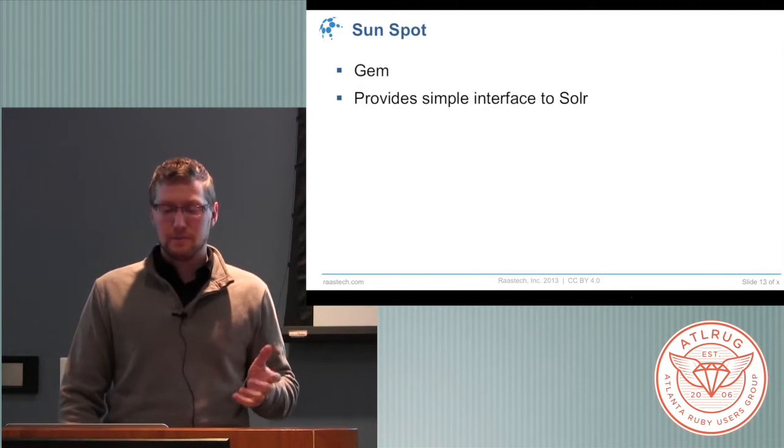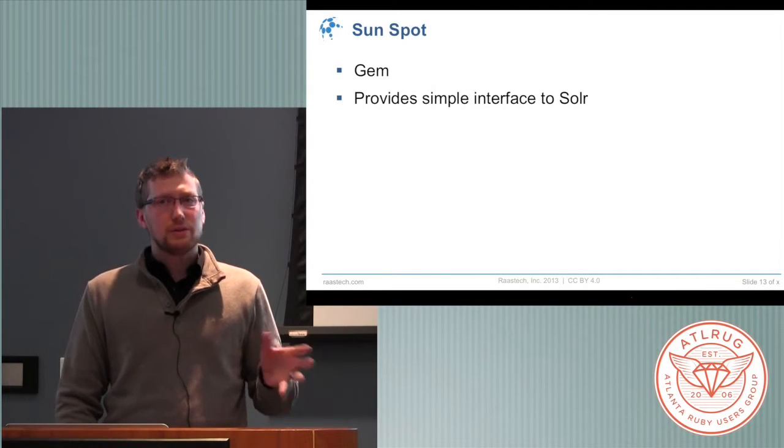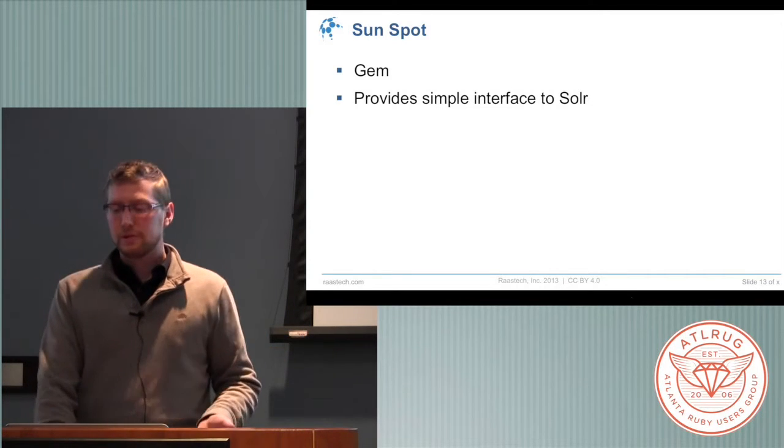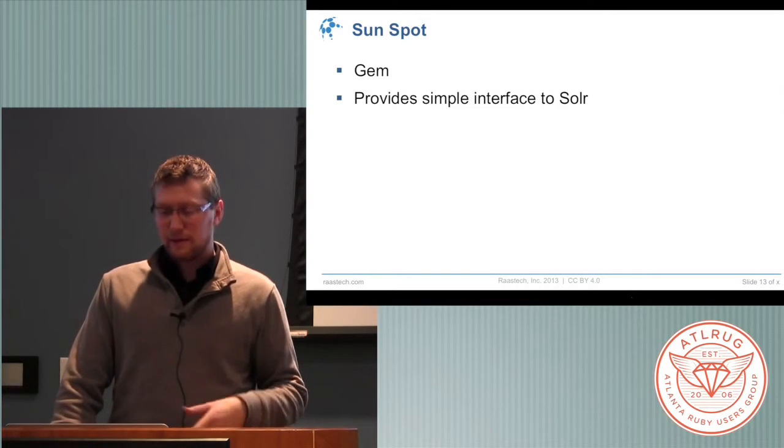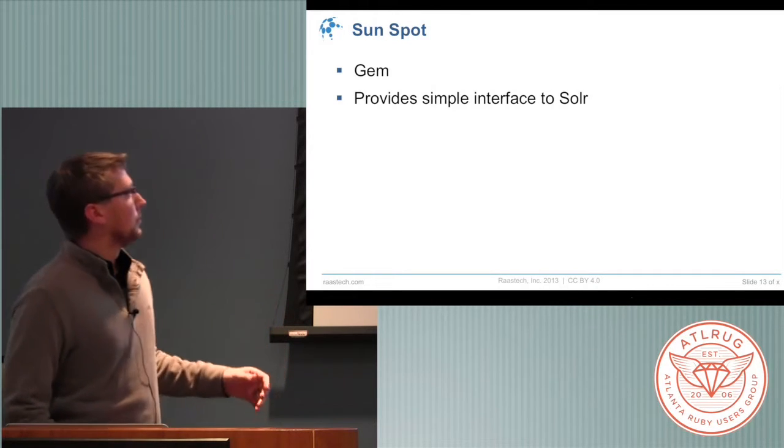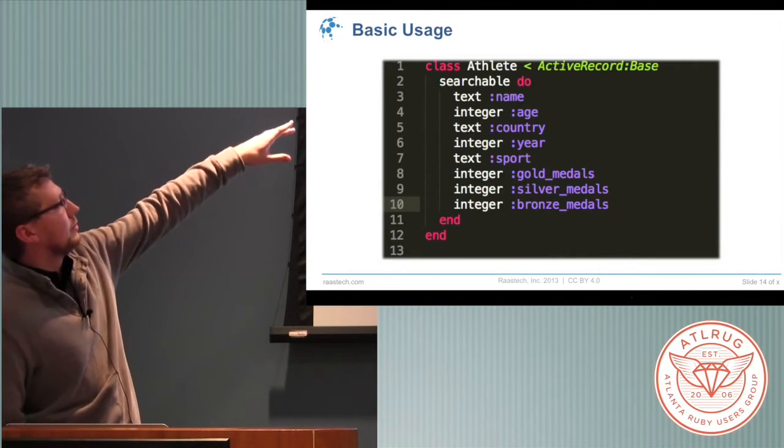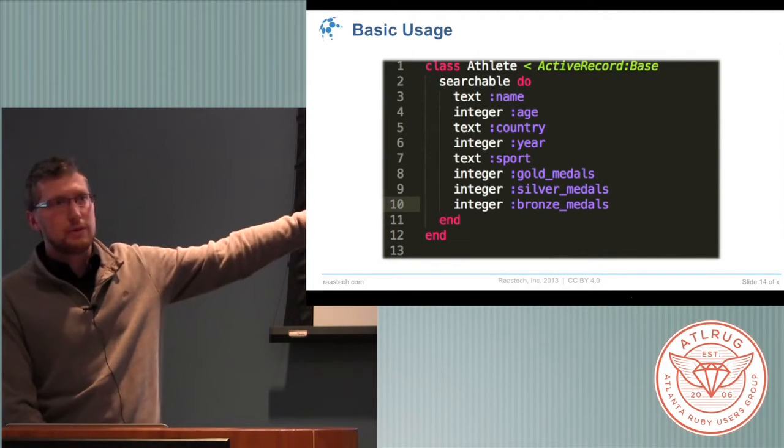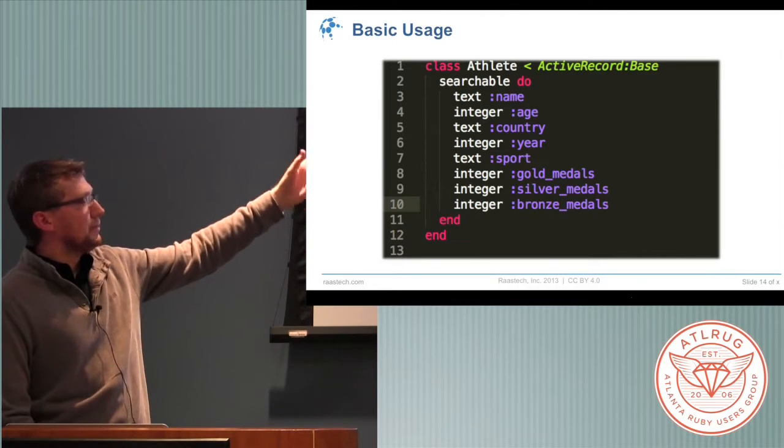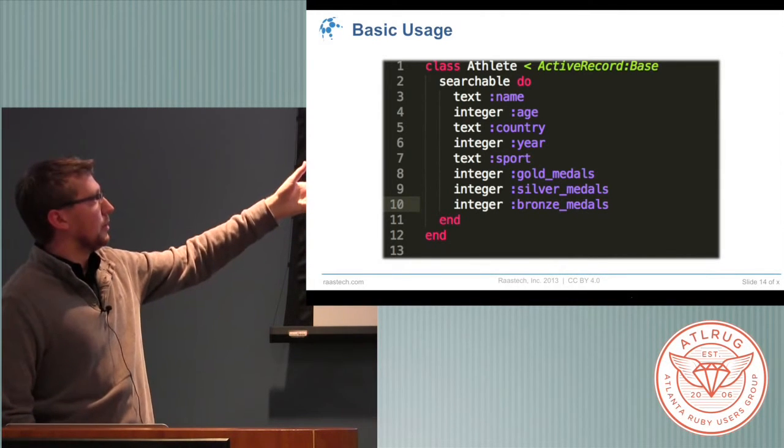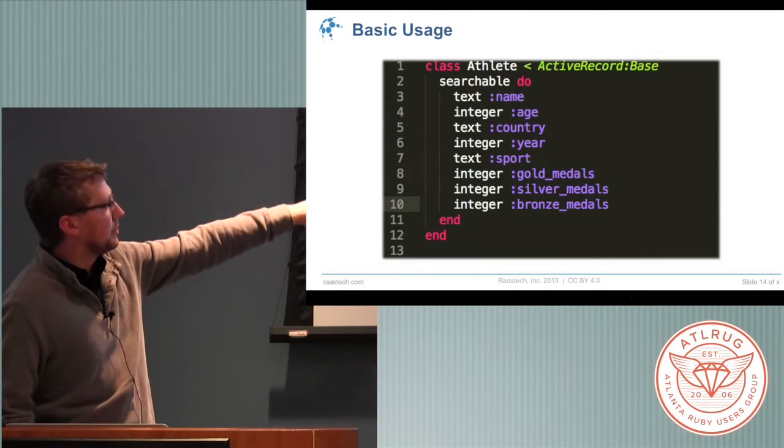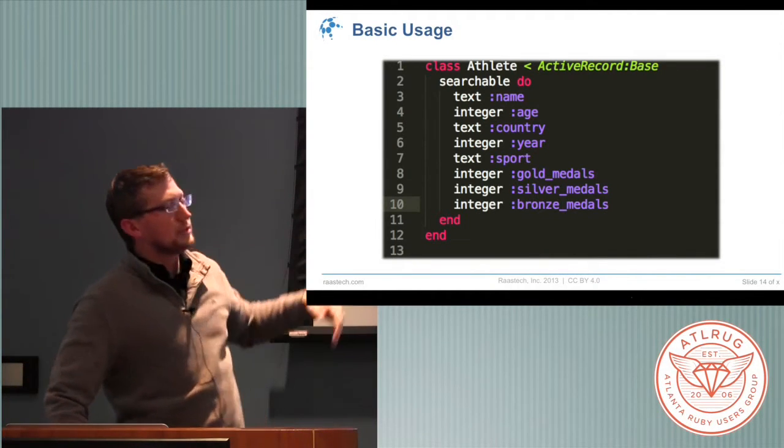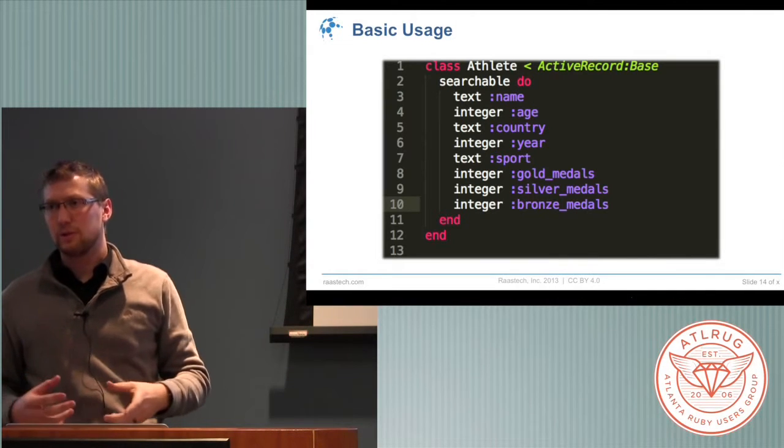So as far as the gem, Sunspot's the one that I use. There are a couple others, but this seems to be the more popular one. It provides a very simple interface, and you put it right into the model. As you can see up here, you have the different types of fields. The field names are just as they would be, symbols as you'd mention them any other place. And then the type there, such as text. If you mention it as text, it's something that you can do in a full text search, which I'll show you in a bit.